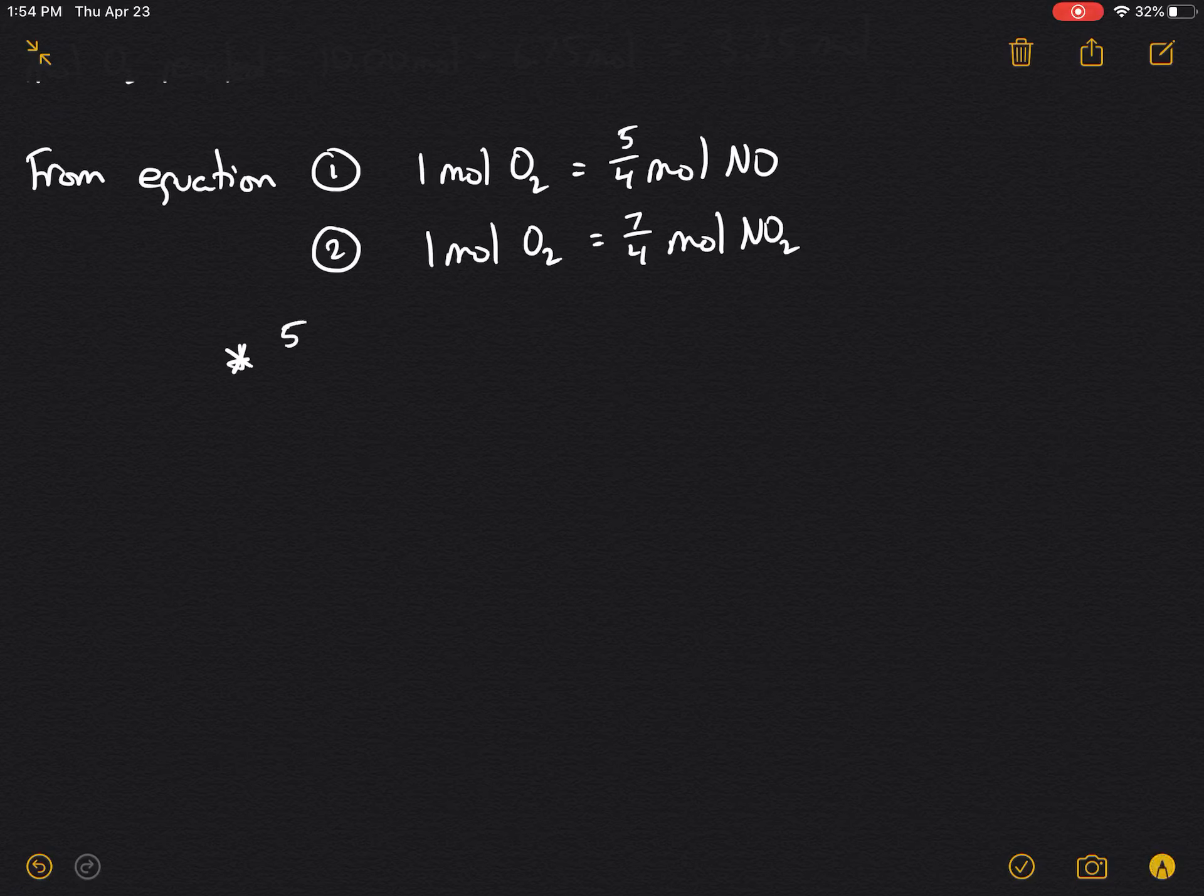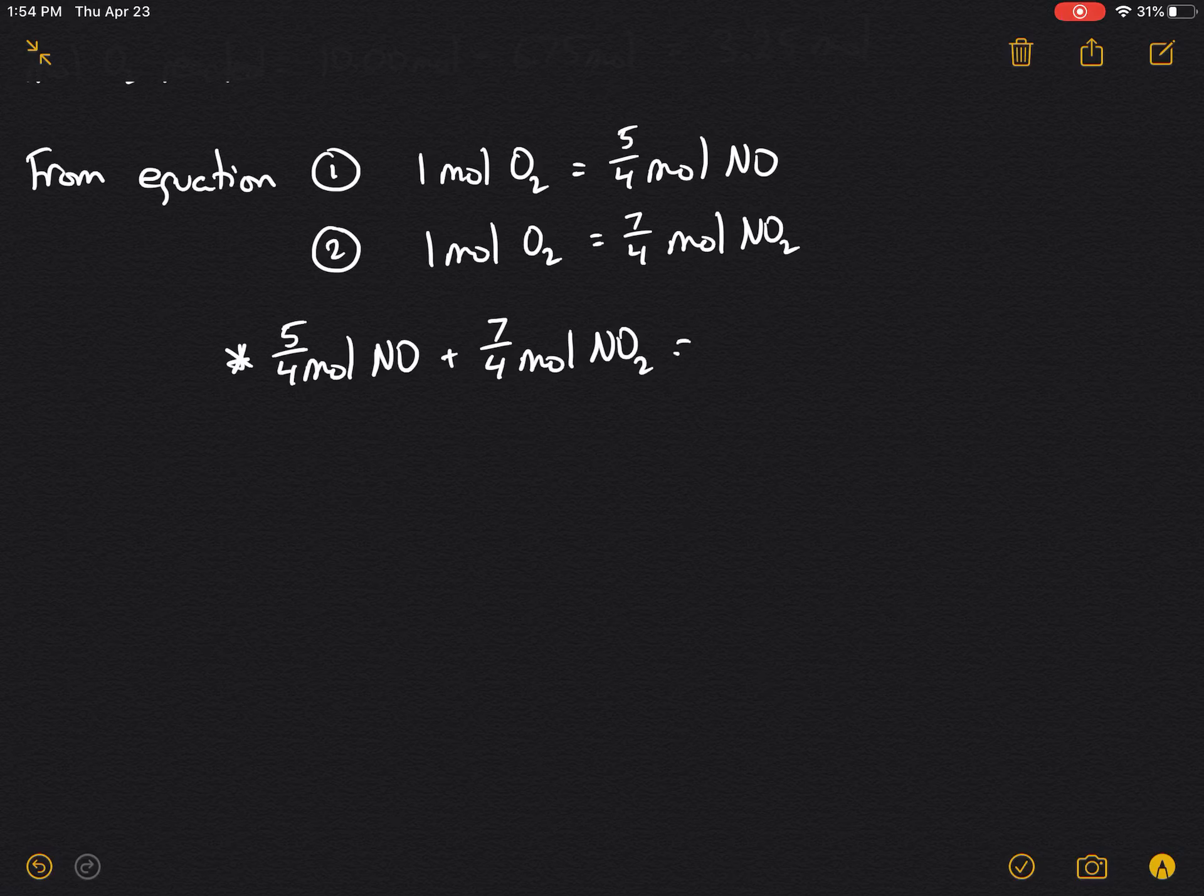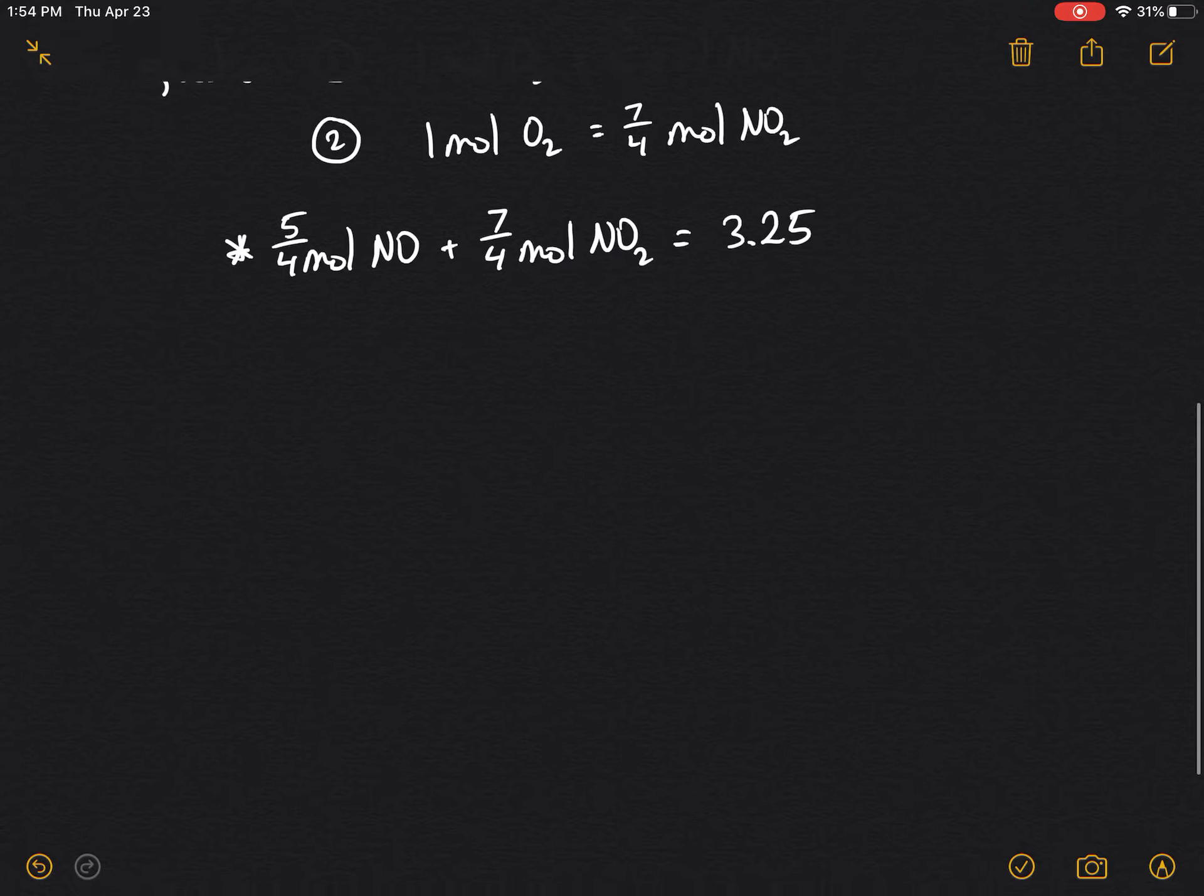Therefore, we can come up with a relationship here that 5/4 mole of NO plus 7/4 mole of NO2 will be equal to the amount of O2 that reacts, which is equal to 3.25.